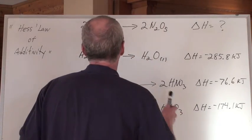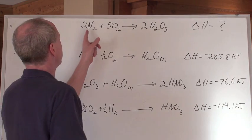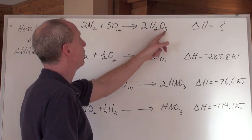So here's a nice one. Here is the equation you want the delta H for. It's N2 plus O2 makes N2O5.